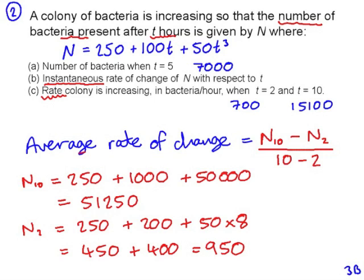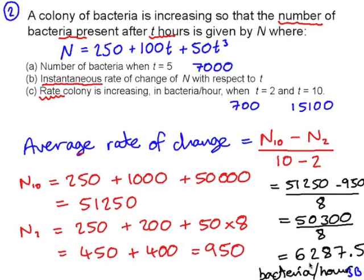So going back to our equation, the average rate of change is 51,250 take 950, divide by 8, 6,287.5. So after 2 hours, the bacteria were increasing at a rate of 700 bacteria per hour and after 10 hours, 15,100 bacteria per hour. But on average, between these two times, the bacteria increased at a rate of 6,287.5 bacteria per hour.